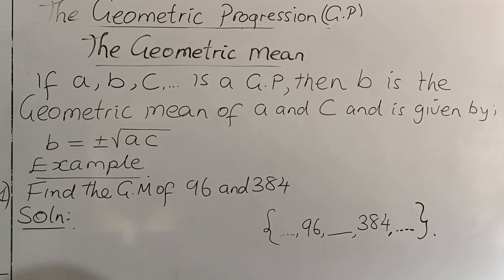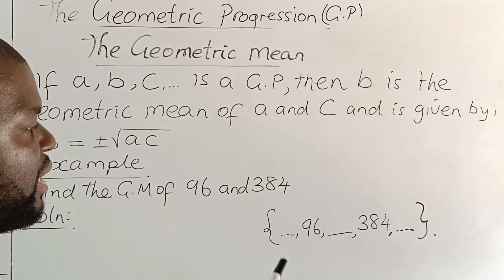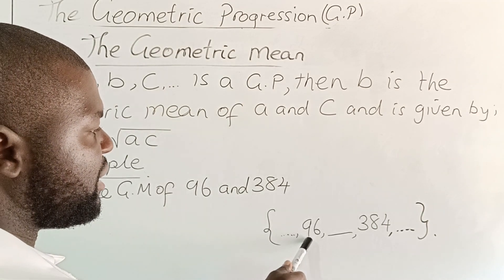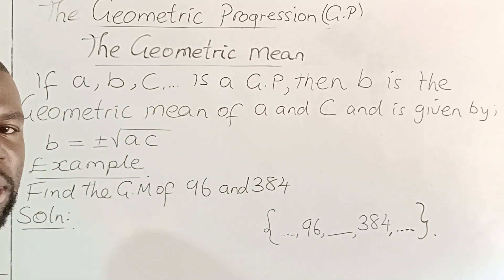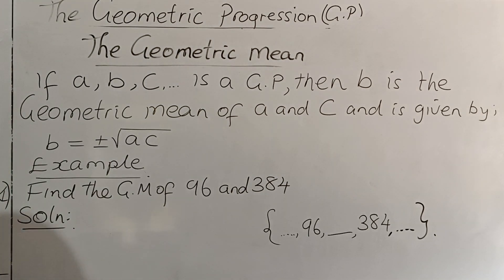By the definition of a GP, we know that the geometric mean is the number between other numbers in a GP. So since we are told to get a geometric mean of 96 and 384, we know that we are getting the term between 96 and 384 in this particular GP.